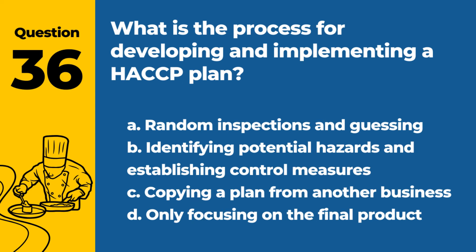Question 36. What is the process for developing and implementing a HACCP plan? a. Random inspections and guessing. b. Identifying potential hazards and establishing control measures. c. Copying a plan from another business. d. Only focusing on the final product. Answer: b. Identifying potential hazards and establishing control measures. This is the core of developing an effective HACCP plan.